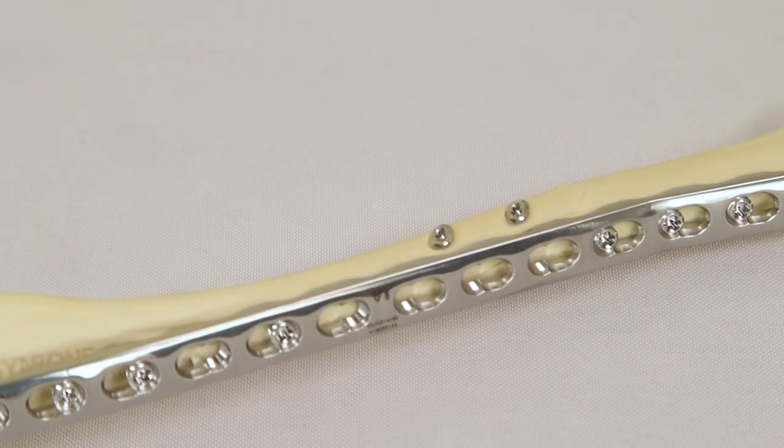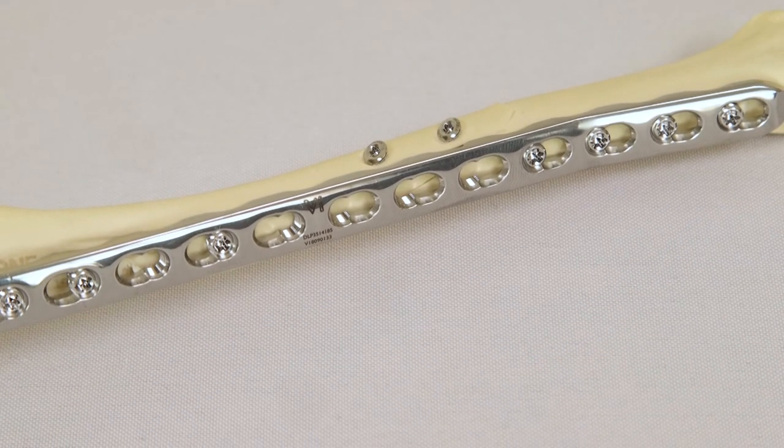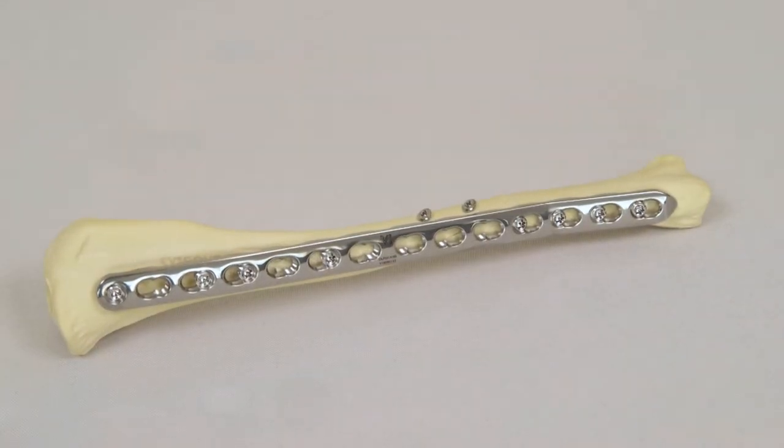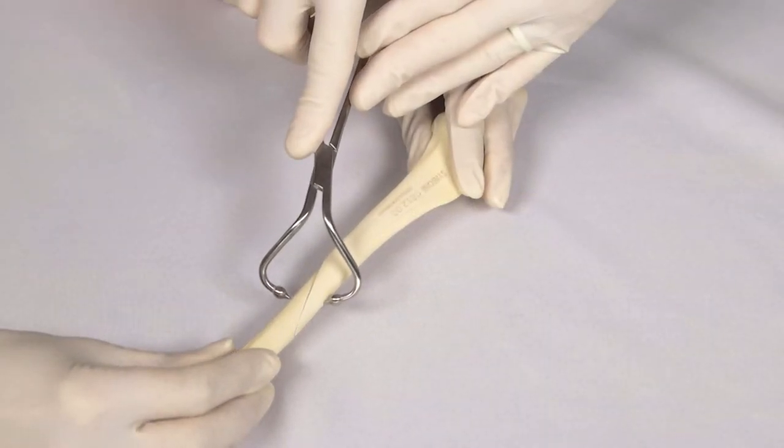In this example, the oblique fracture will be stabilized using two lag screws placed in a cranio-caudal direction to create compression across and perpendicular to the fracture. The fracture is stabilized and compressed using reduction forceps.